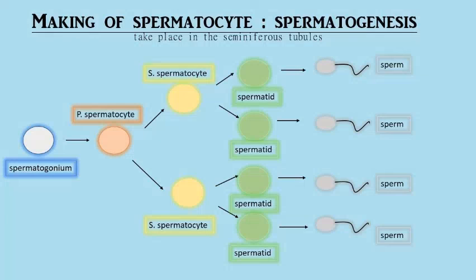Four spermatids specifically. Then for each of the spermatids, it forms into sperm. And that is the process of spermatogenesis, briefly. Thank you so much for watching.